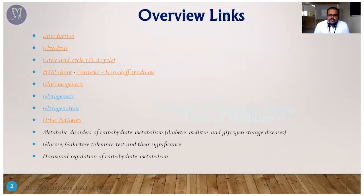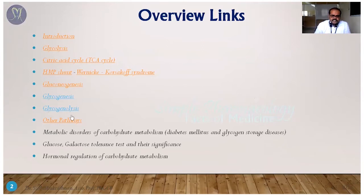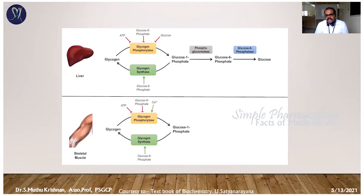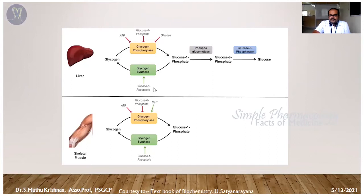The next topic is glycogenolysis. Once you understand the basic concept of glycogenesis, it is easy to understand glycogenolysis. Glycogenolysis is simply the reverse of glycogenesis — the breakdown of glycogen into glucose. This picture is an easy representation of the glycogenolysis process.